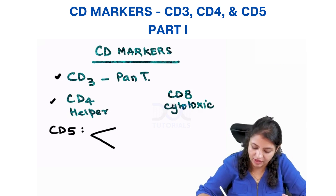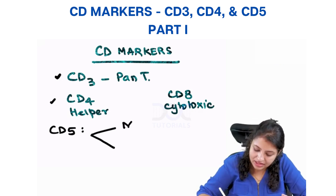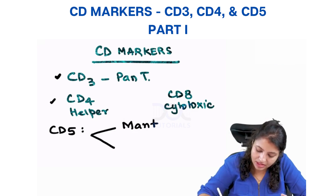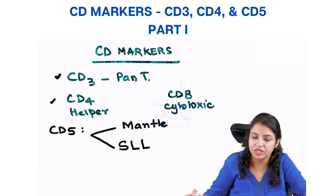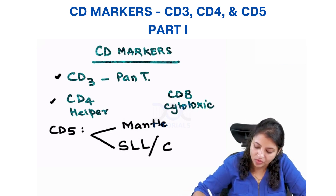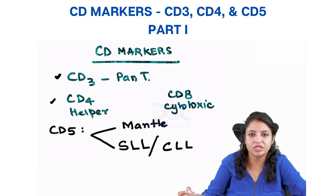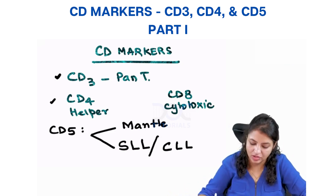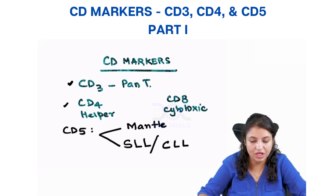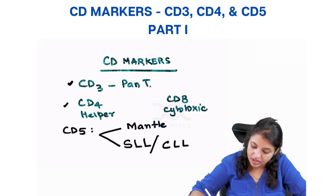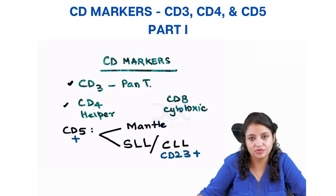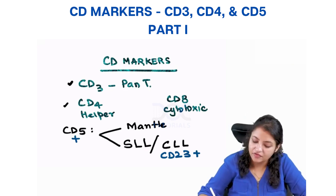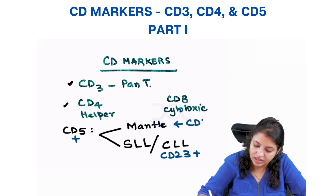The 2 lymphomas that are CD5 positive: number one is mantle cell lymphoma, and number two is small lymphocytic lymphoma. When it involves bone marrow, it is also called chronic lymphocytic leukemia. To differentiate these two, remember CD23 positive — along with CD5, if CD23 is also positive, then it is CLL or SLL, whereas in mantle cell lymphoma, CD23 is negative.